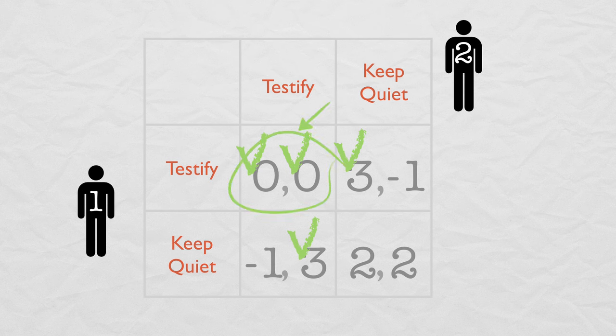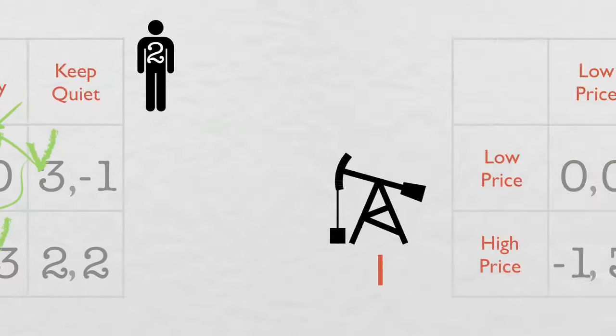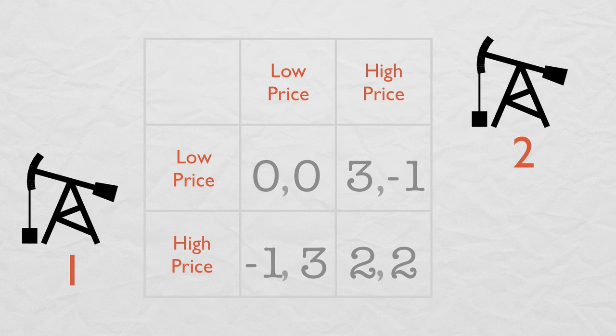The Prisoner's dilemma comes up in all sorts of situations. For instance, instead of prisoners, our players could be, say, oil companies. If both set a high price, they can sell for a high price. But each one has an incentive to undercut, in which case he will capture the entire market. The equilibrium outcome is for each company to charge a low price.